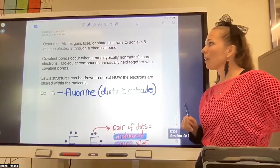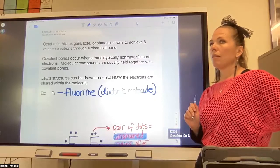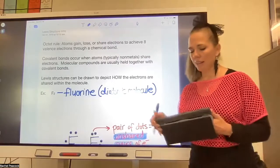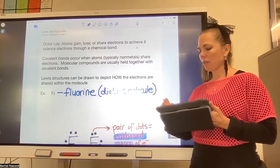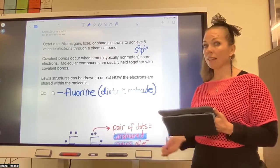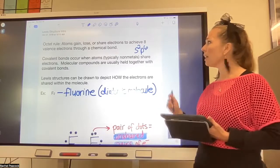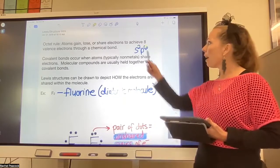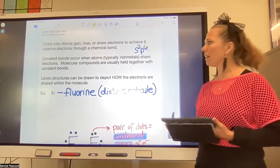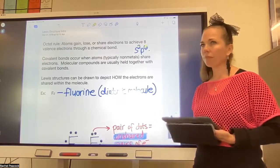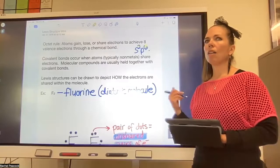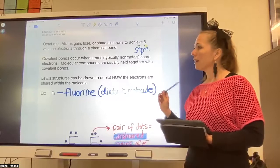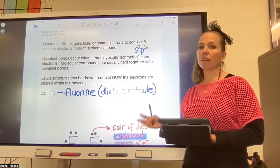Remember the octet rule. Elements want to be like the noble gases because the noble gases have the s2p6 valence electron configuration, which means that they have eight valence electrons in their outer energy level. So in terms of bonding, all other elements are bonding in an attempt to get eight valence electrons like the noble gases.